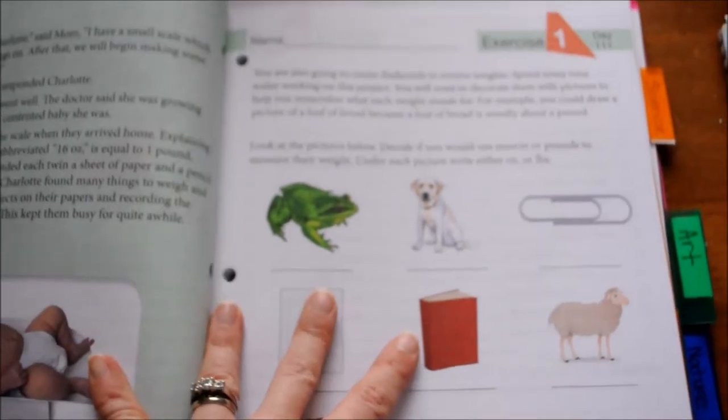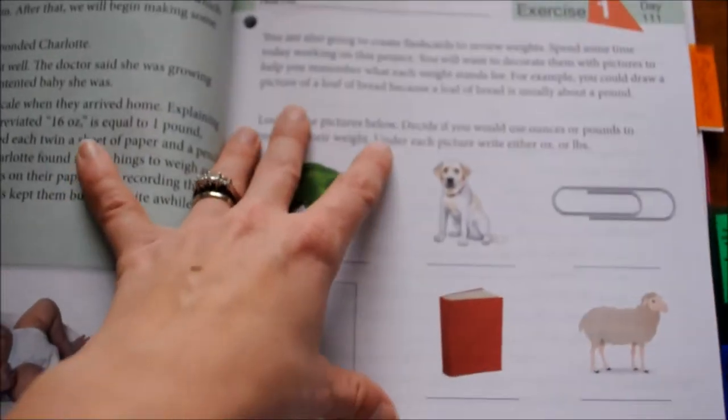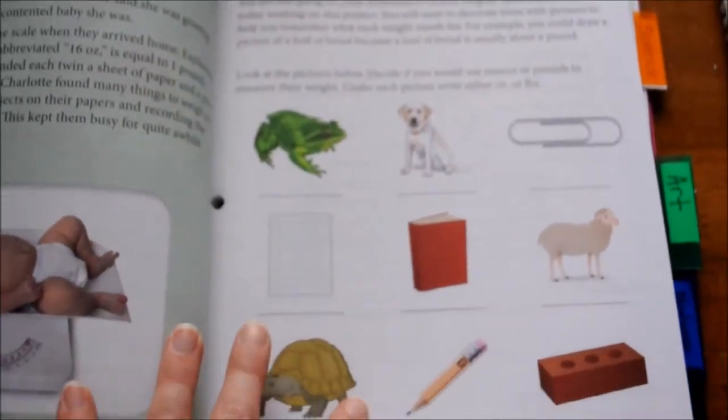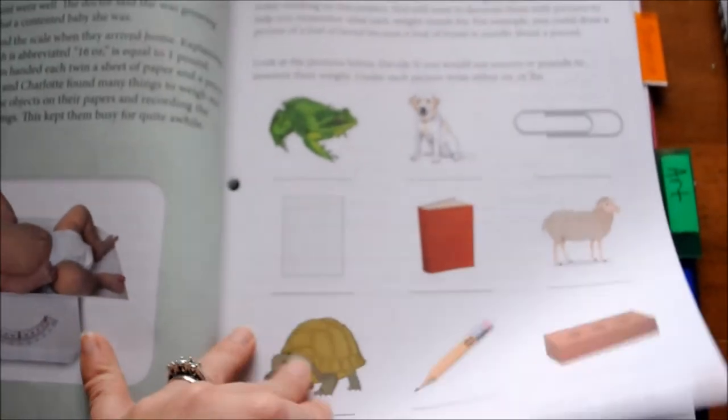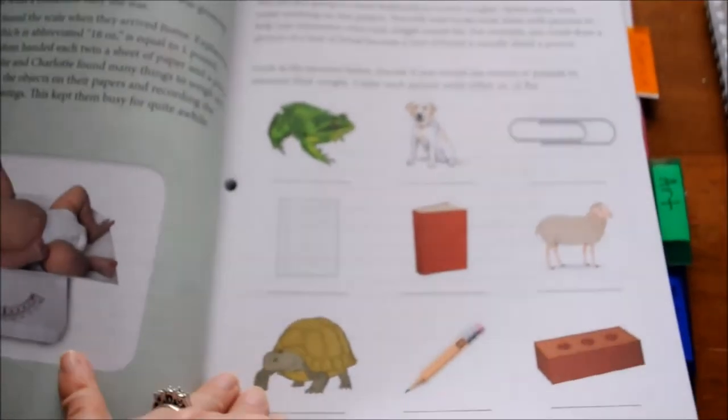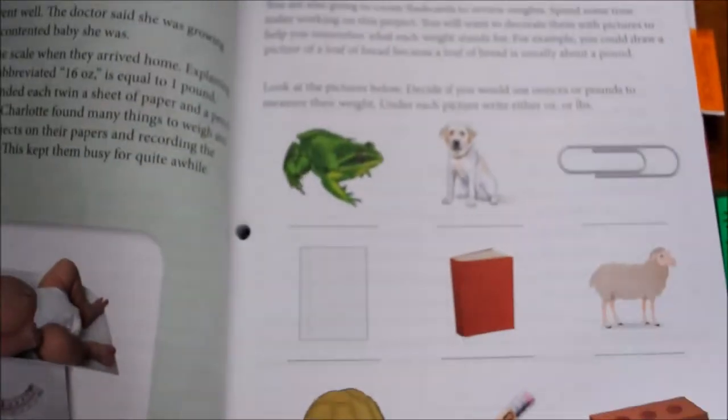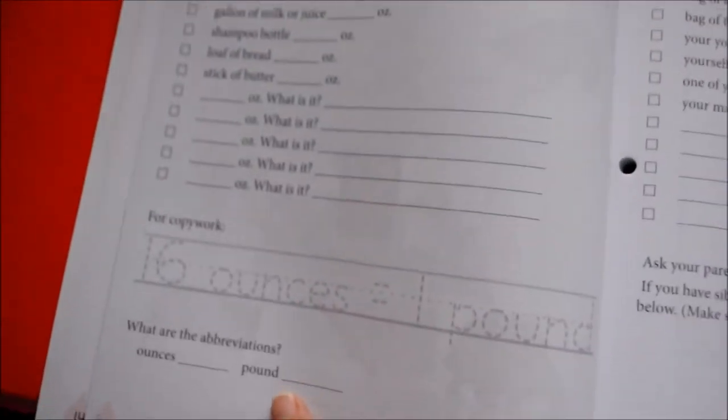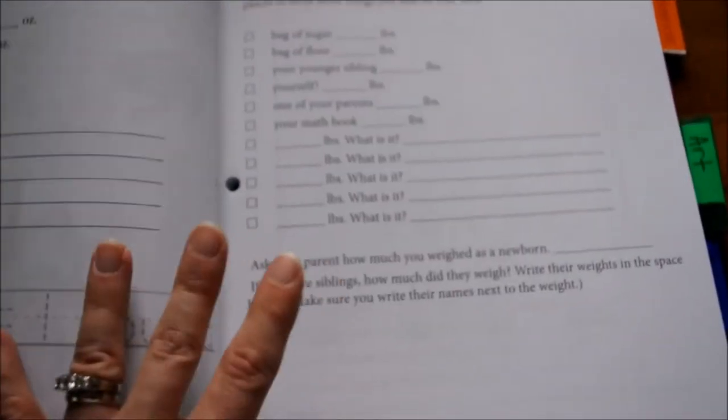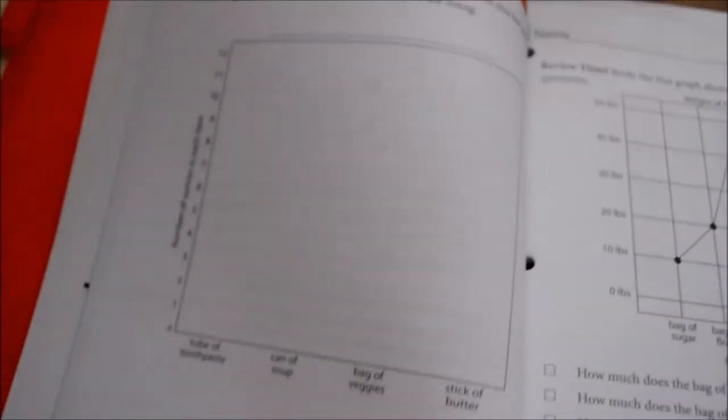It's very Charlotte Mason based. This is it for day one. She only has to do this one page, that's it. And she loves that. She is not one to sit down and do math for an hour. She does maybe five minutes of math. Then on day two she'll do this, and then day three, that's it.